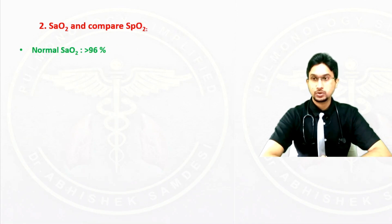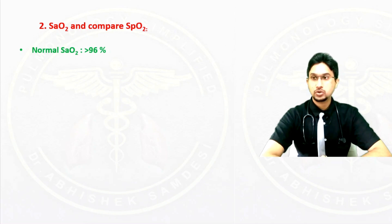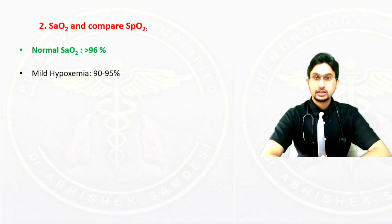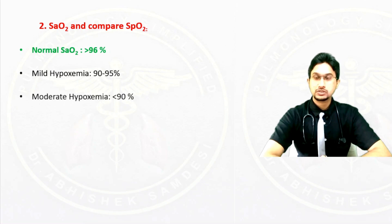Normal SaO2 is usually more than 96%. Mild hypoxemia is when the SaO2 is between 90 to 95%. Moderate hypoxemia is when the SaO2 is less than 90%.